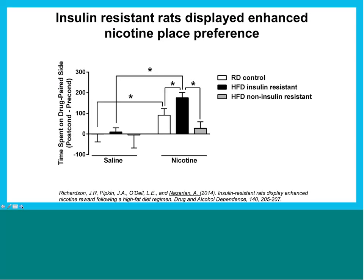When we look at the rewarding effect of nicotine in our type 2 diabetic animals, animals with insulin resistance (the black bars) exhibit a greater place preference — i.e., a greater rewarding effect — for nicotine compared to controls. Importantly, high-fat-diet animals that did not develop insulin resistance did not show a nicotine place preference, meaning they didn't find nicotine pleasurable. This aligns with data from Julie Blendy's lab at the University of Pennsylvania showing that obese individuals and mice don't seem to care much for nicotine, though that study did not control for insulin resistance.